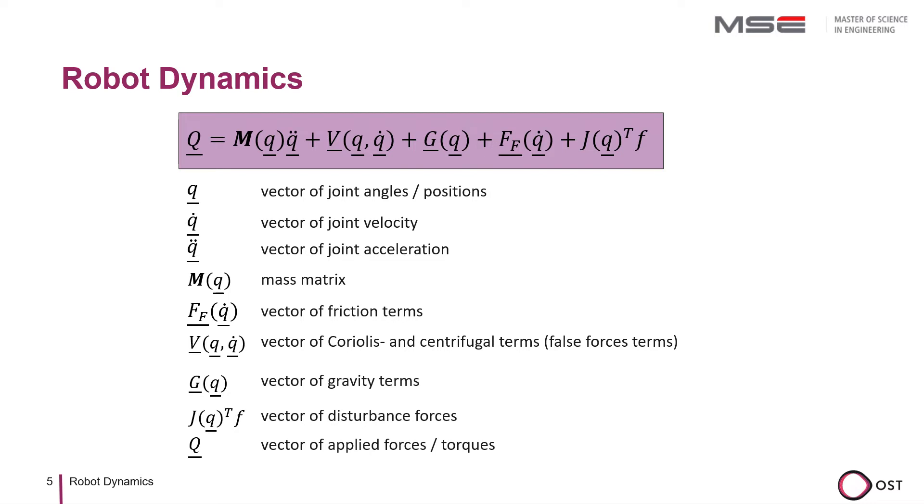This equation can be used to describe any robot. In most cases, however, only the first three terms are used and the last two are ignored. Lagrangian mechanics is often used to derive the specific equation for a particular robot. However, how to find the terms in this equation as easily as possible is highly dependent on your robot kinematics.